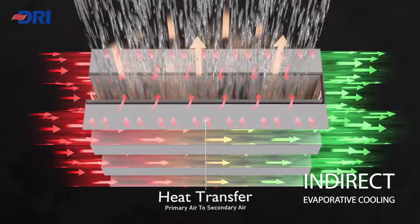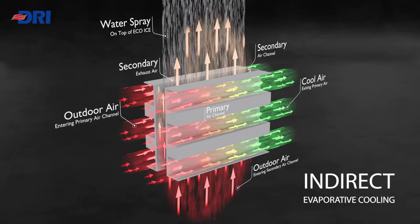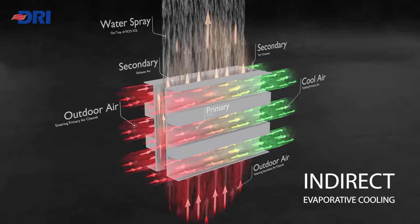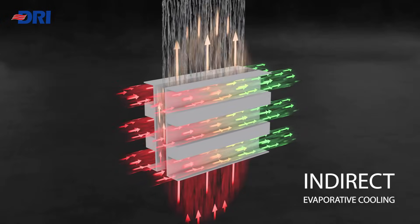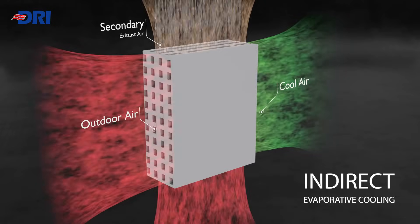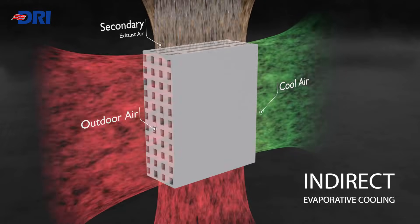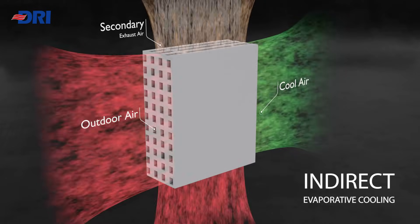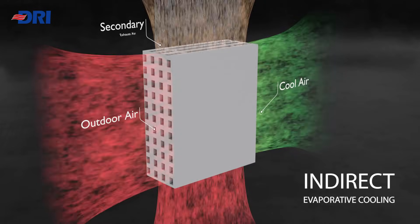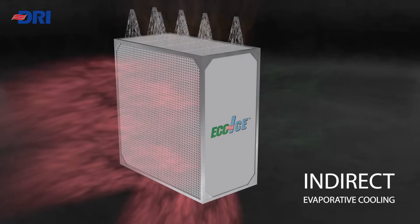Thus, the primary air, moving through dry channels, is cooled indirectly without any moisture addition. The indirect evaporative cooling process therefore works effectively in both arid and humid climatic conditions.